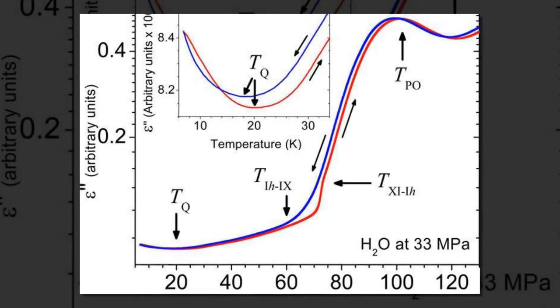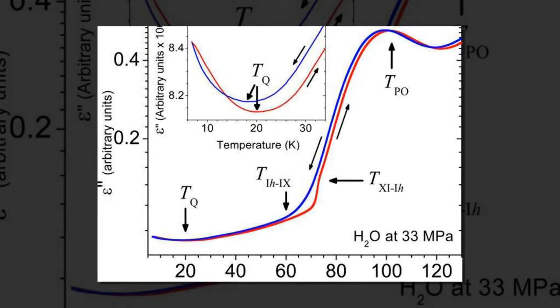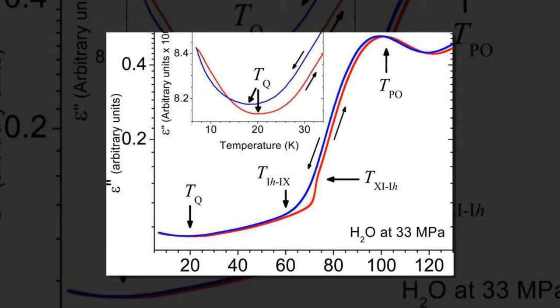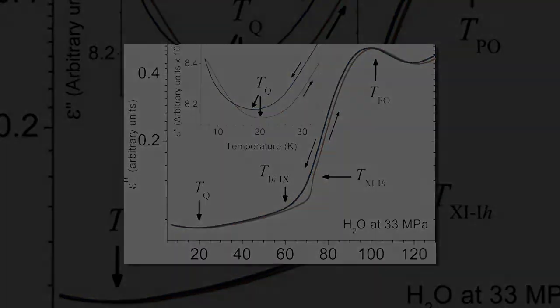Scientists have discovered an anomaly in the properties of ice at very cold temperatures near 20 K, which they believe can be explained by the quantum tunneling of multiple protons simultaneously.